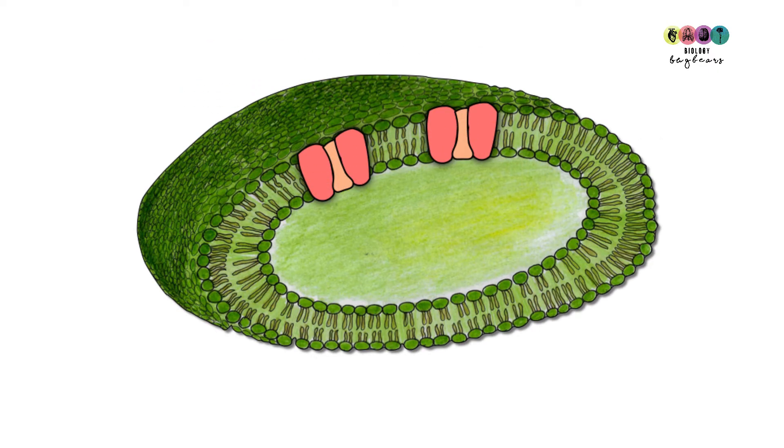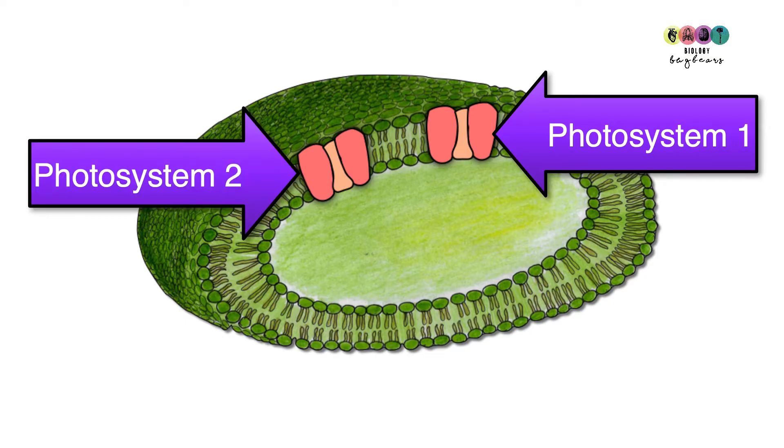Just for our better understanding, let's look at one of the thylakoid membranes, one of those green discs. You can see that in the membranes of the thylakoid are these two structures. These are known as photosystems: photosystem one and photosystem two.